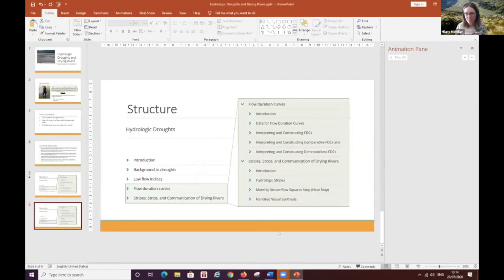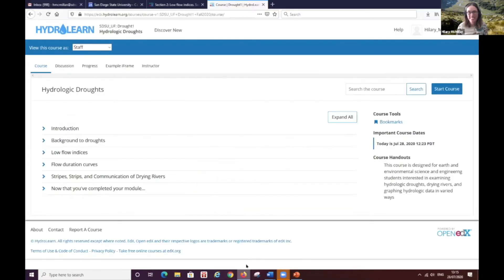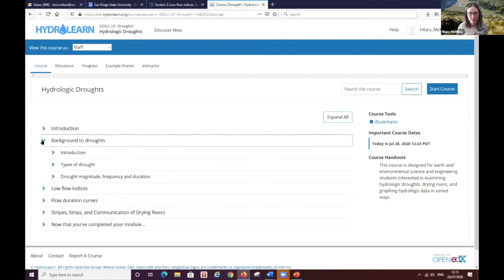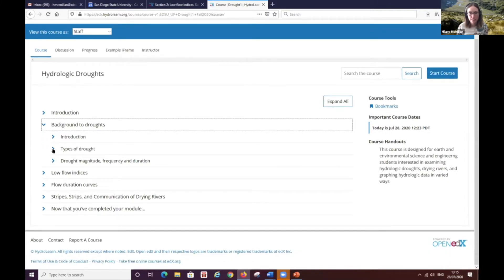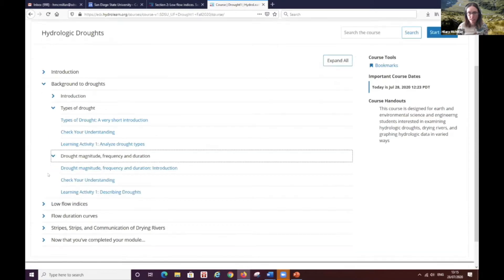So I'll just switch over to the module. Okay, so hopefully you can see this module now. So here's our module. And this is the background section. And so the background section, if I expand those, you can see that these have the same kind of outline so that it introduces the student to the topic. There's a short check your understanding quiz, and then a learning activity, which basically asks them to do a reading, and then produce either a discussion post or a short discussion with their partner.